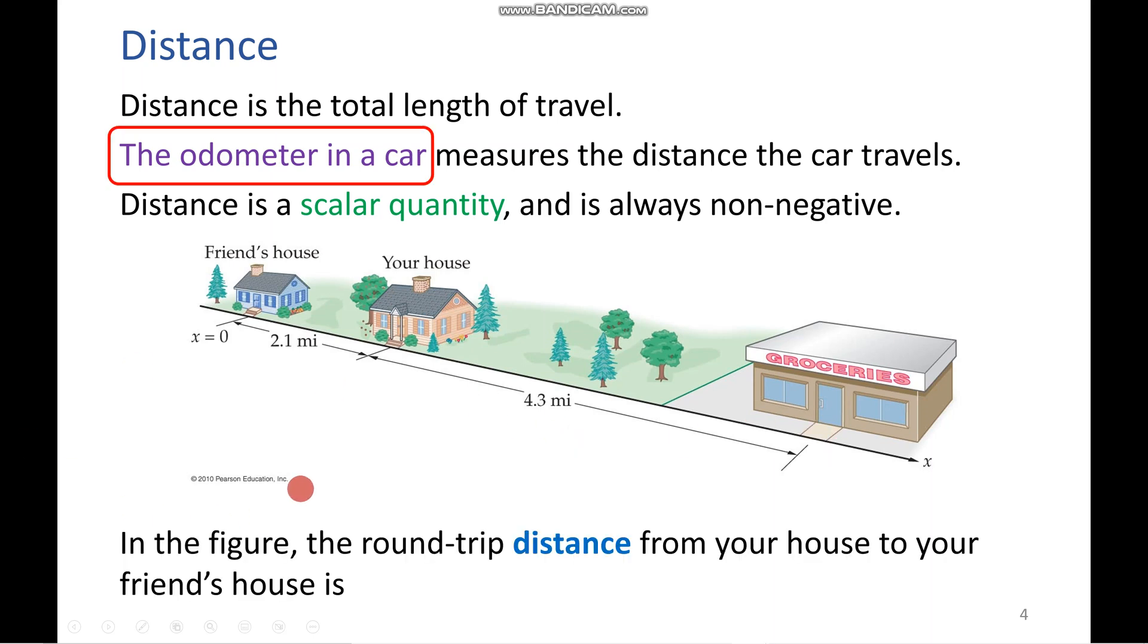So, knowing this, let's do a quick practice problem. Let's say you walked from your friend's house to your house, and then back to your friend's. What would be the distance that you traveled? Well, the answer would be 4.2 miles. You've got 2.1 this way, and then another 2.1 back, 4.2.